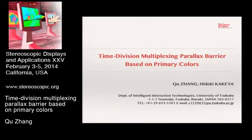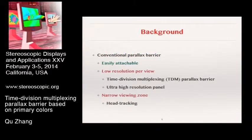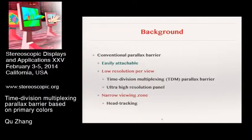I will start from the background. As introduced in the first presentation of this session, conventional parallax barrier is easily attachable and has already been used in some products. However, it suffers from two main issues: low resolution preview and narrow viewing zone. The first issue can be resolved by time division multiplexing, TDM, parallax barrier or ultra-high resolution panels. Head tracking is regarded as a helpful way for the second issue.